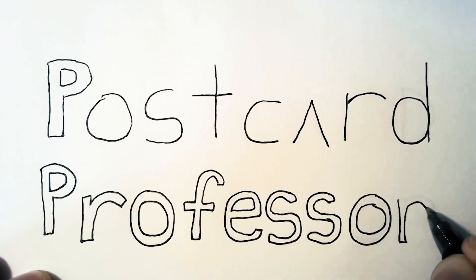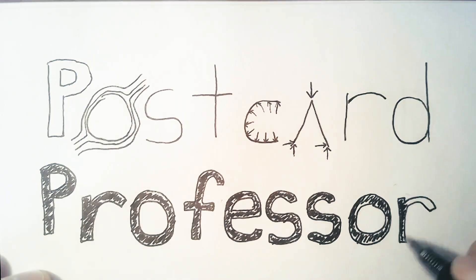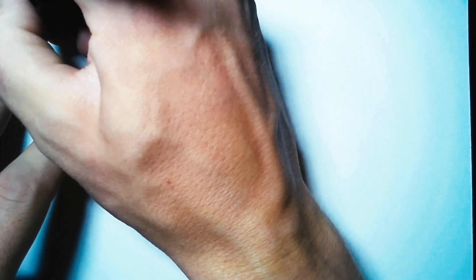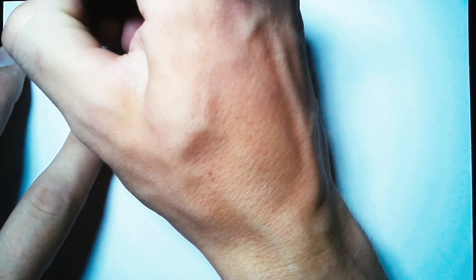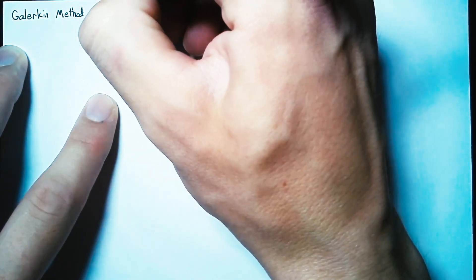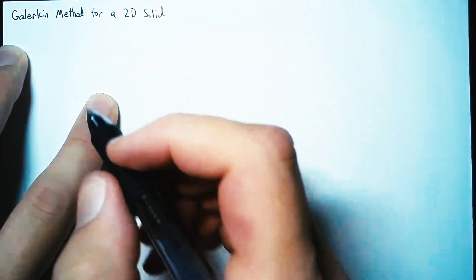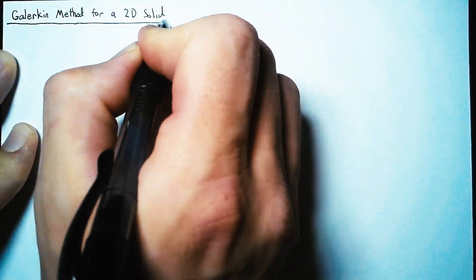Hello and welcome to The Postcard Professor, where we take complex ideas and explain them in the space of a postcard. In this video, we're going to be looking at the Galerkin method for a 2D solid. A bit of fair warning: we're not going to get all the way to a stiffness matrix this time. We're just going to work through the differential equation and the process of integration by parts, and end up with something we can use in the next video to build that stiffness matrix.